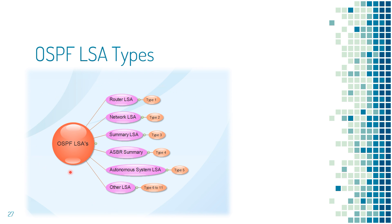Routers in each area generate one or more Link State Advertisements. The collection of LSAs forms the Link State Database. Each LSA type has a specific function. The LSA types are: Router LSA, Network LSA, Network Summary LSA, ASBR Summary LSA, and AS External LSA. Router LSAs are generated by each router in an area about all of its connected links. This LSA is flooded within the area. To view, use the command 'show ip ospf database router'. The RIB of OSPF will show routes marked with O.